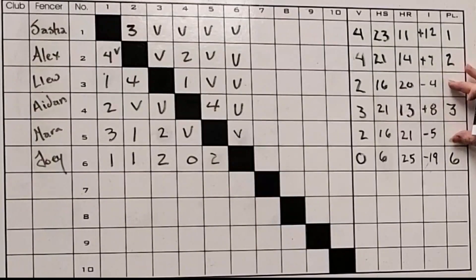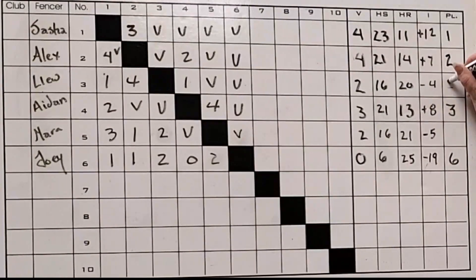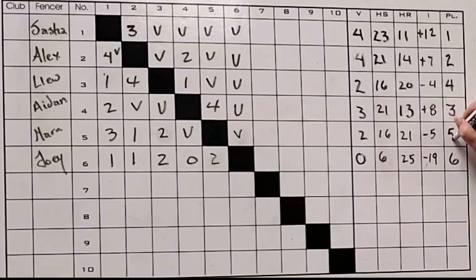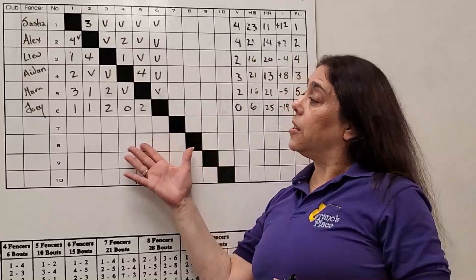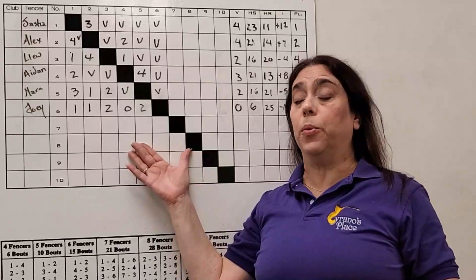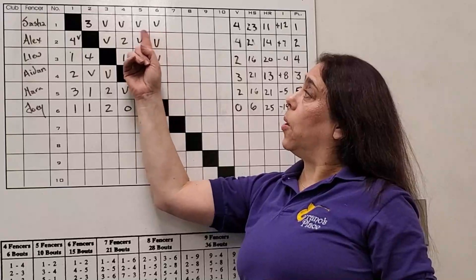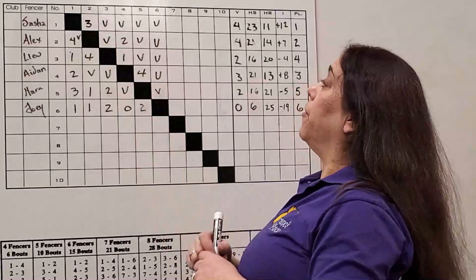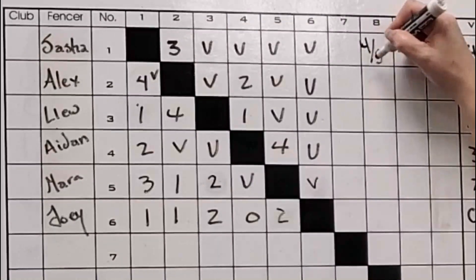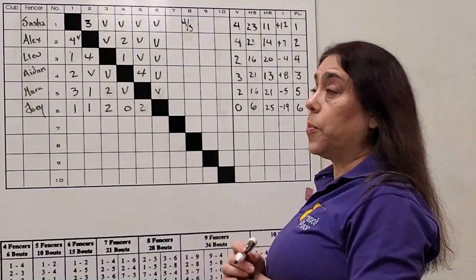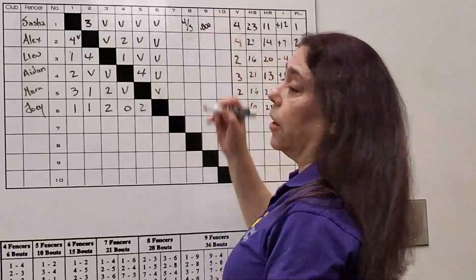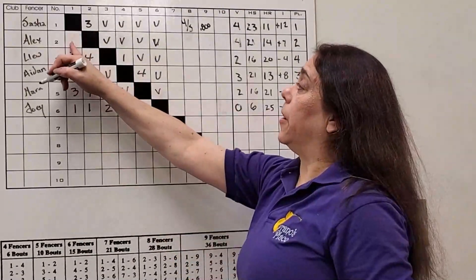Now the problem arises, this is not the only pool, and you have a second pool with, say, seven fencers. In Sasha's case, she won four bouts out of five. Four out of five bouts, if we put that to a percentage, that's 800 percent. Let's say Alex, instead of fencing five bouts, only fenced four bouts, and he had four out of four bouts. Well, that's a percentage of 1000 percent.